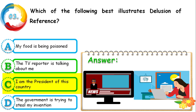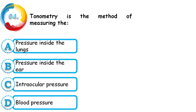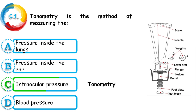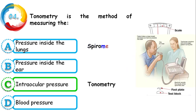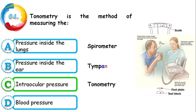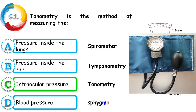Question 4: Tonometry is a method of measuring — pressure inside the lungs, pressure inside the ear, intraocular pressure, or blood pressure? The correct answer is intraocular pressure. Tonometry measures intraocular pressure, and on the image you can see that instrument. For measuring pressure inside the lungs, a spirometer is used; for inside the ear, tympanometry; and for blood pressure, a sphygmomanometer.